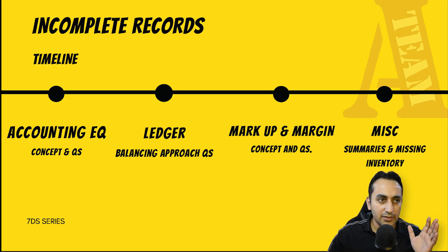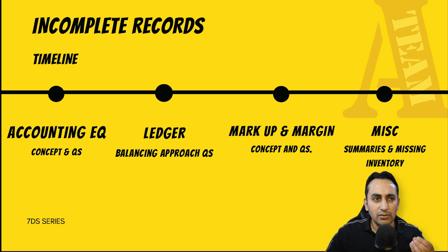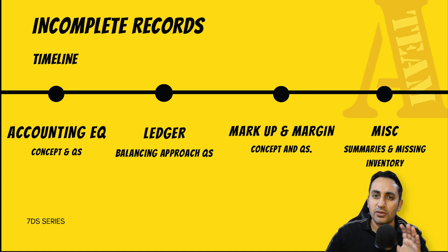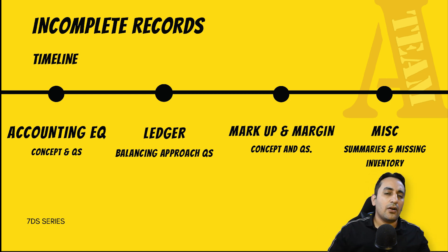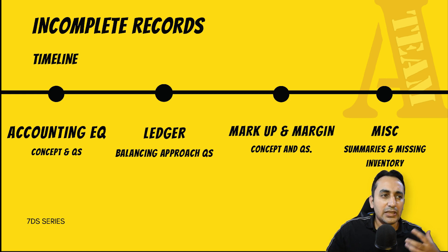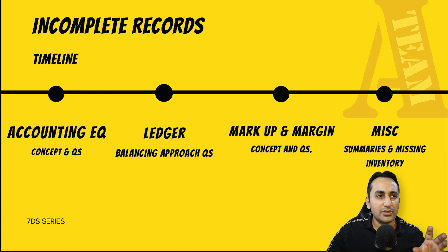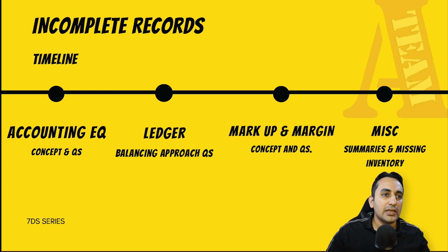Incomplete records के अंदर बिल्कुल Class 11 वाले छोटे-बड़े concepts होते हैं, उन्हीं का इस्तेमाल होता है। Questions में variety भी limited रहती है और बहुत ही आसानी से आप समझ सकते हैं। कोई बाई-चांस नया question बनता है तो उसे भी समझना मुश्किल नहीं होता, because वही basics हर जगह apply होते हैं।